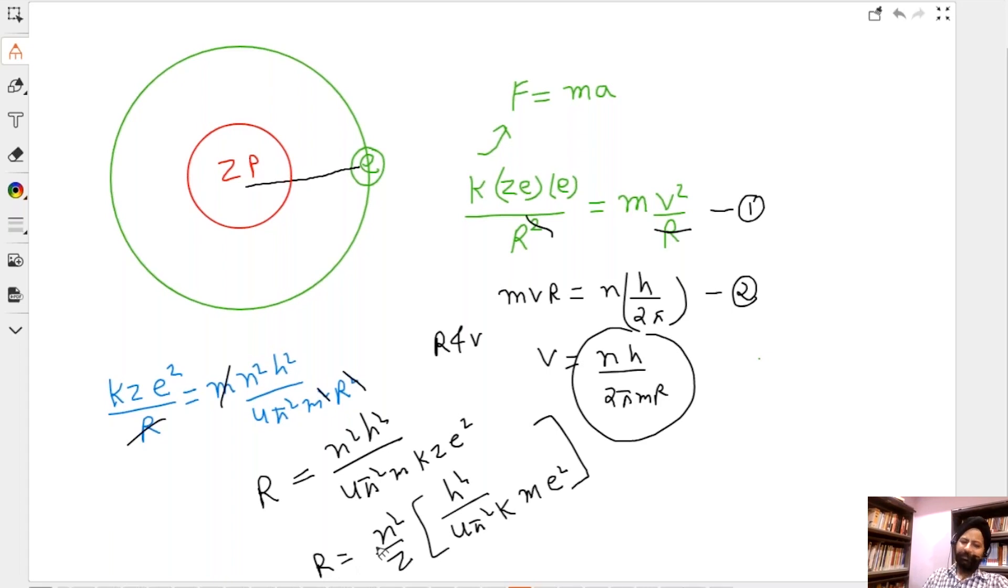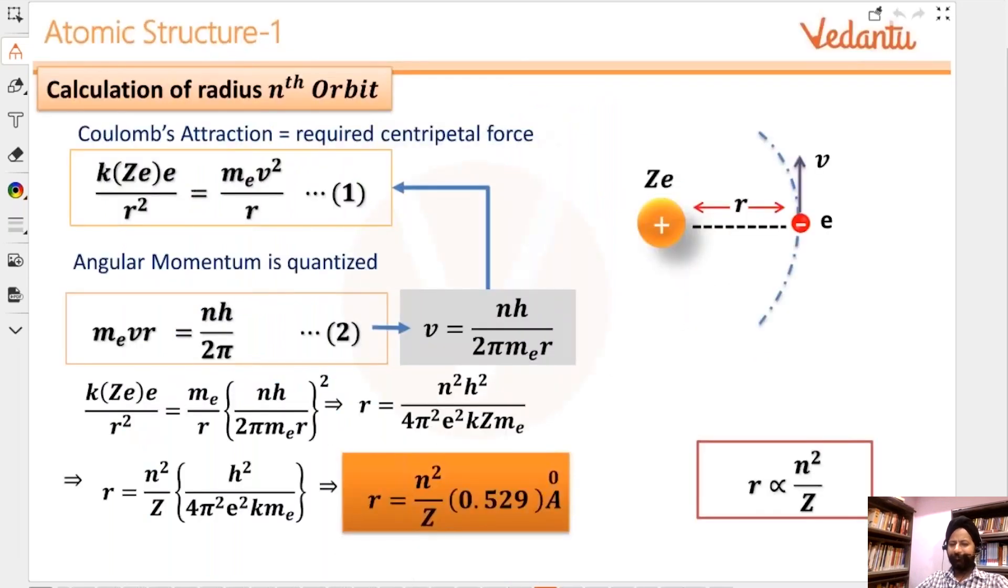Now the thing on the inside, the parenthesis, is going to be calculated to 0.529 angstroms. So this thing, if you plug in all these constants here, everything is a constant, you get 0.529 angstroms. So this is the radius.